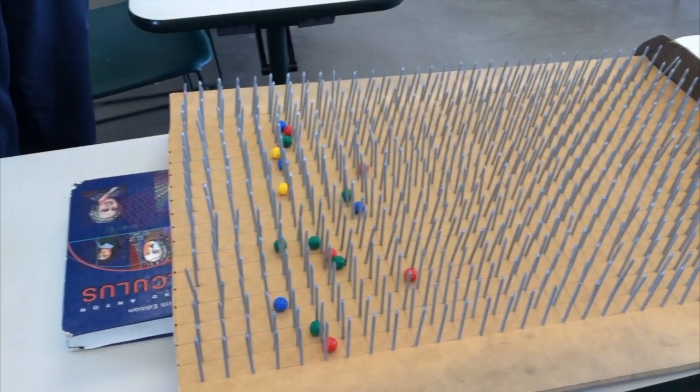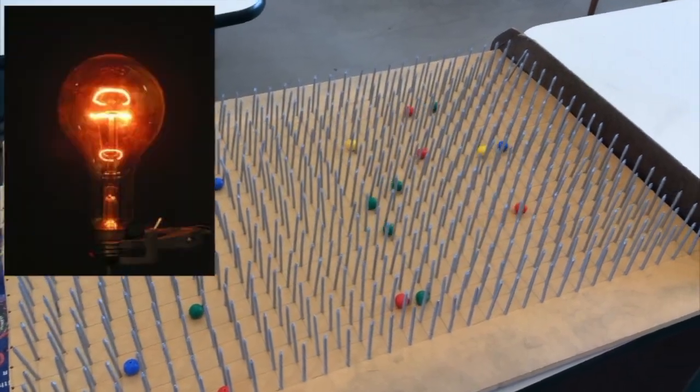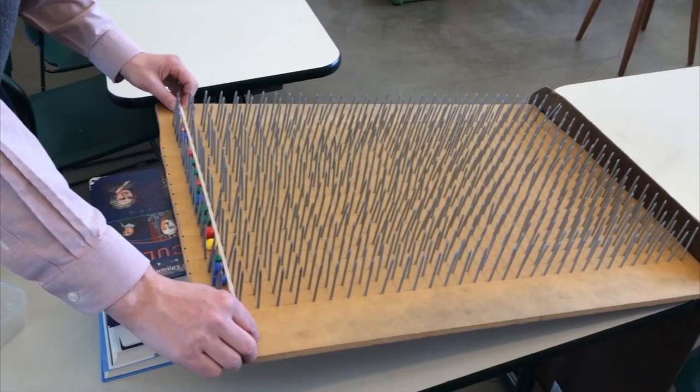Each time a ball hits a nail, the nail vibrates, and we hear a little tink, tink, tink. When the ball hits a nail hard, there's a louder tink. When an electron hits an atom, it vibrates and produces heat and light.